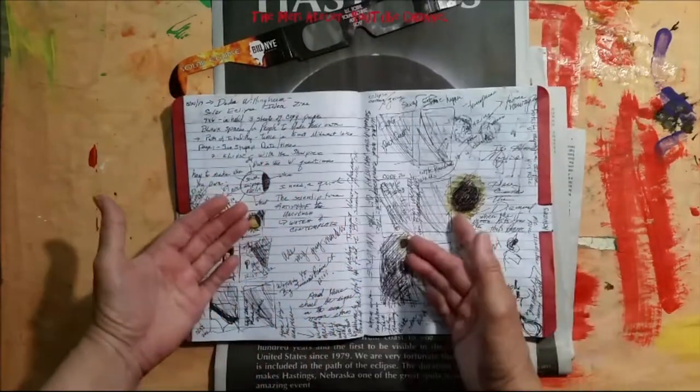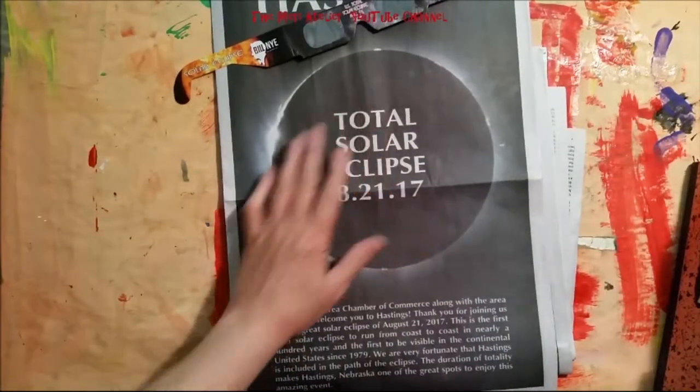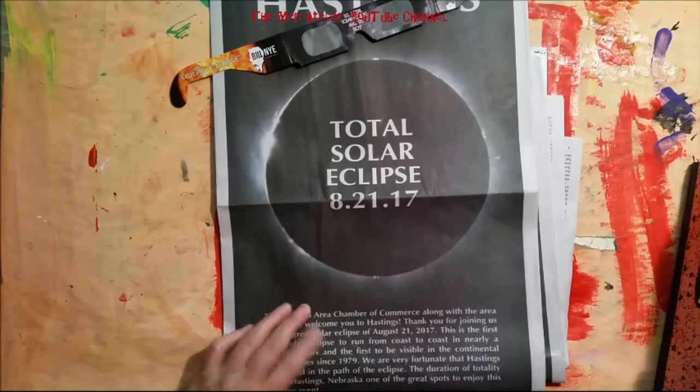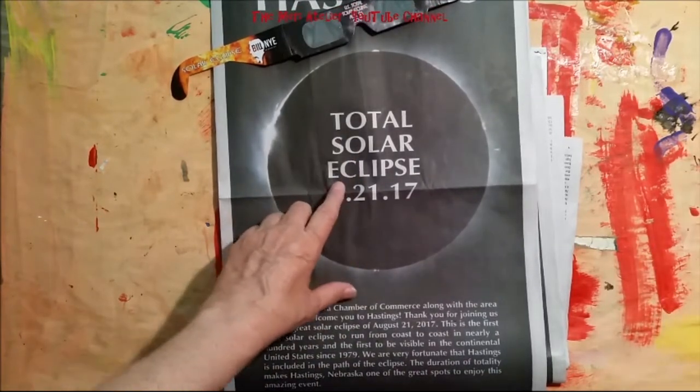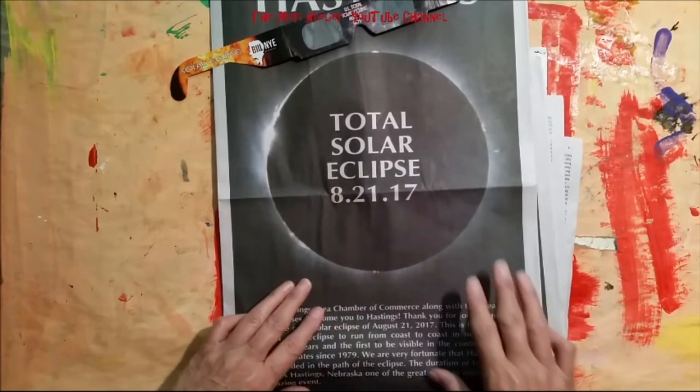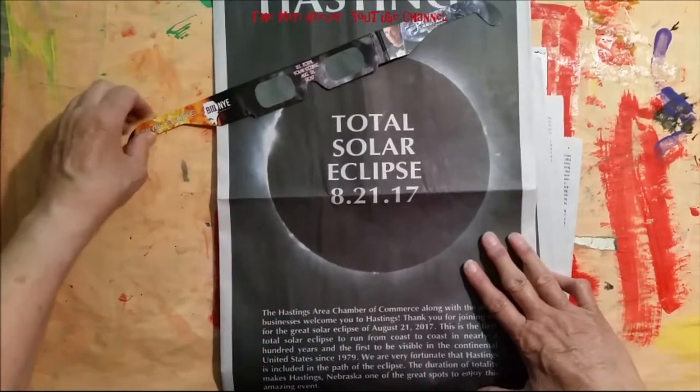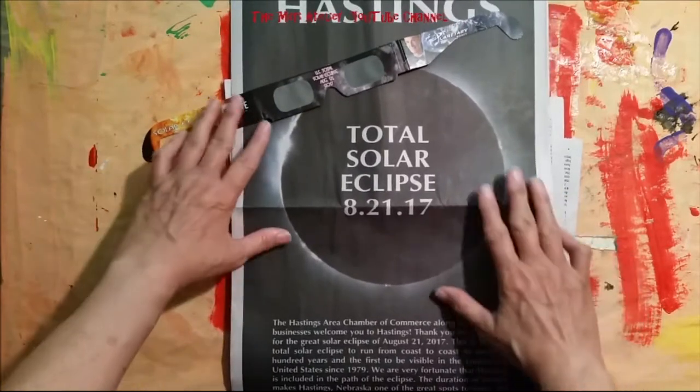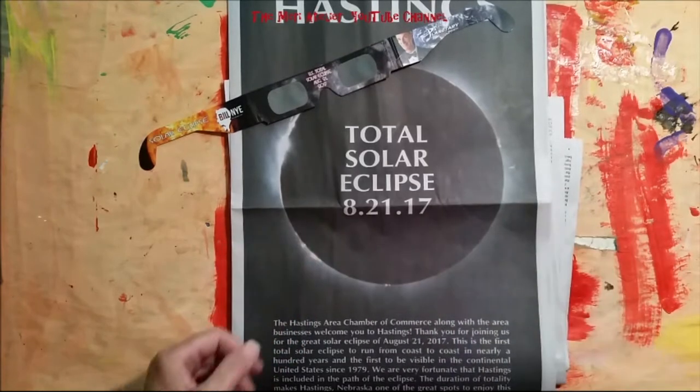So this video that I'm going to work on today is going to be all about the August 21st 2017 total solar eclipse. We were in the path of totality so we did get to see it turn dark around us. So I'm going to get started and when I'm finished I'll come back and show you the page.